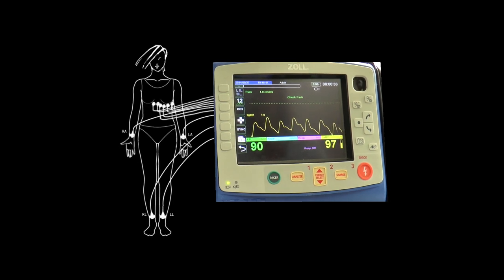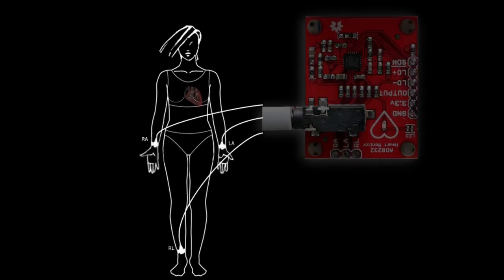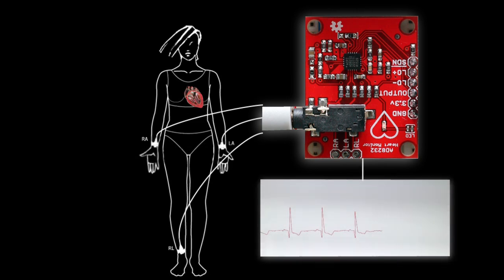Unlike in a conventional 12-lead ECG, in which 10 electrodes are placed on the patient's limbs and chest, here, for simplicity, we use only 3 electrodes, placed on limbs or just on the chest.